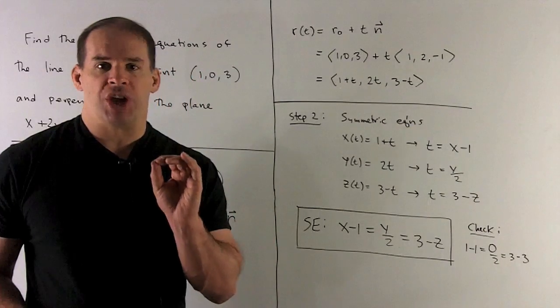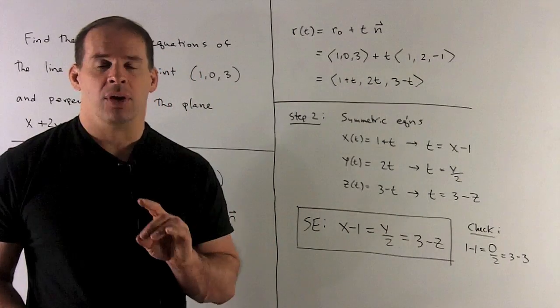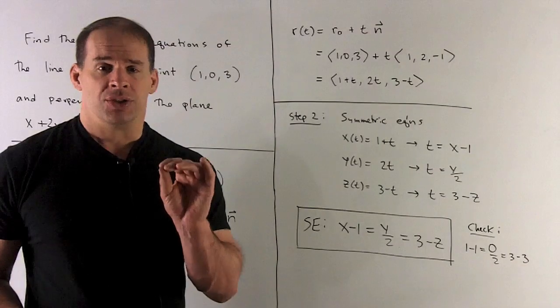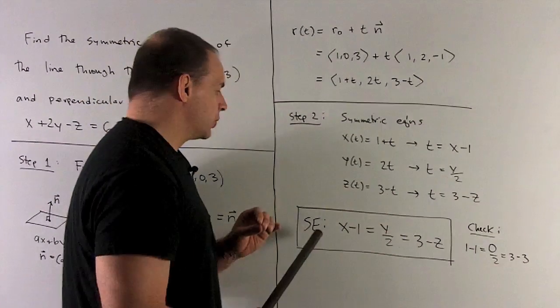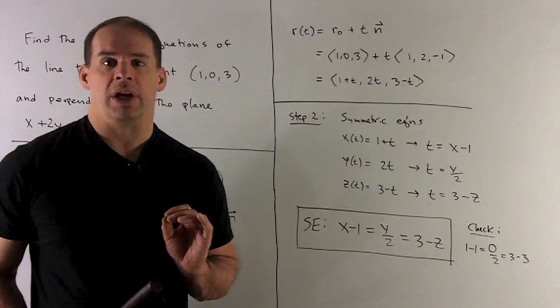So we don't have a degenerate case here where we can't solve for one of our variables in terms of t. So the idea then is just let these three items be equal to each other, and that's symmetric equations.